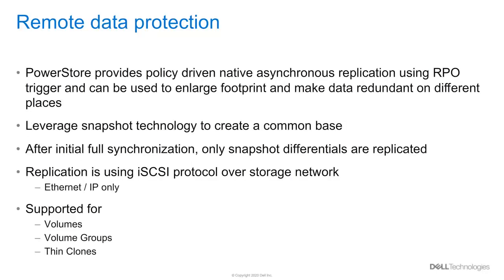The native asynchronous replication is driven by policies configured on the source system of the replication. Policies can contain snapshot rules for local data protection and replication rules for remote protection using asynchronous replication. Remote replication can be used to enlarge the footprint of data and set up data redundancy between remote sites, which might be required for compliance reasons.